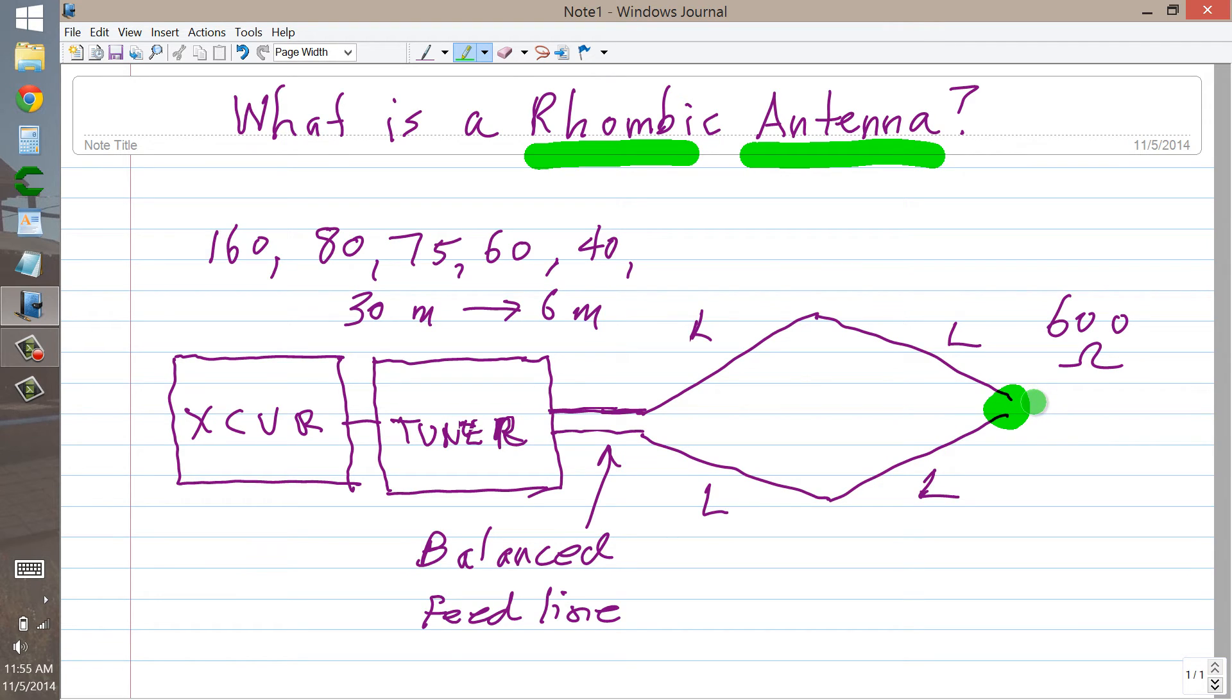and you'd say, why would you want to do that? You're going to lose half of your power in that resistor just heating it up. Well, the reason for that is that it gets rid of the backside of this bi-directional lobe, thereby creating a unidirectional lobe. It doesn't add any gain. It just gets rid of the back response so that